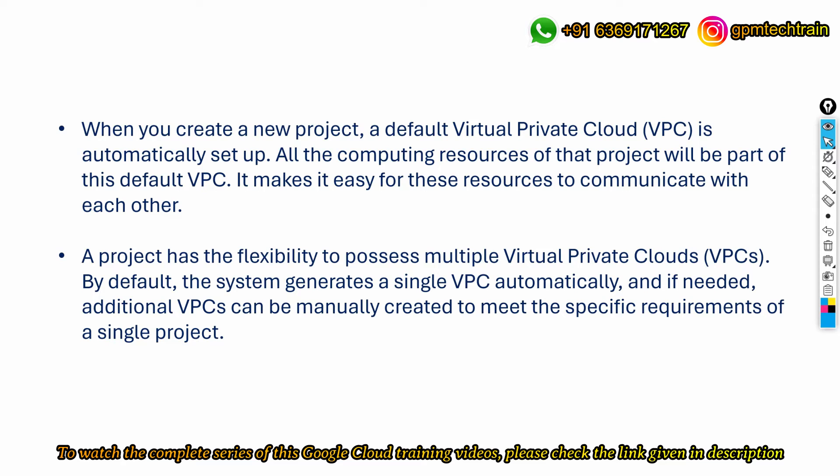Whenever you create any project within Google Cloud, a default VPC is automatically created — you don't need to create it manually. Whatever resources you add to the project are by default added under that virtual private cloud. Your project also has the flexibility to have multiple VPCs; by default the system generates one, but additional VPCs can be manually created to meet specific requirements.